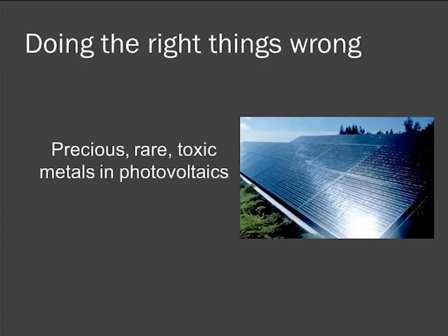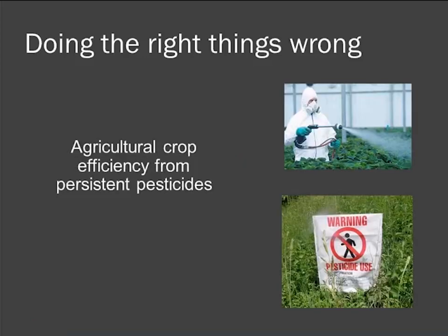The State of California focused on growing the economy using photovoltaics. The industry is growing through the use of precious, rare, and toxic metals to develop these solar cells. The goal is to address climate and move towards renewable energy with a lower carbon footprint — but is this really a sustainable solution if we're relying on resources that may not be available at scale, or are toxic and distributed into engineered systems and ultimately the environment? Similarly, we want to provide increased food production, but is the way to do that through pesticides shown to be persistent and cause harm to other species?